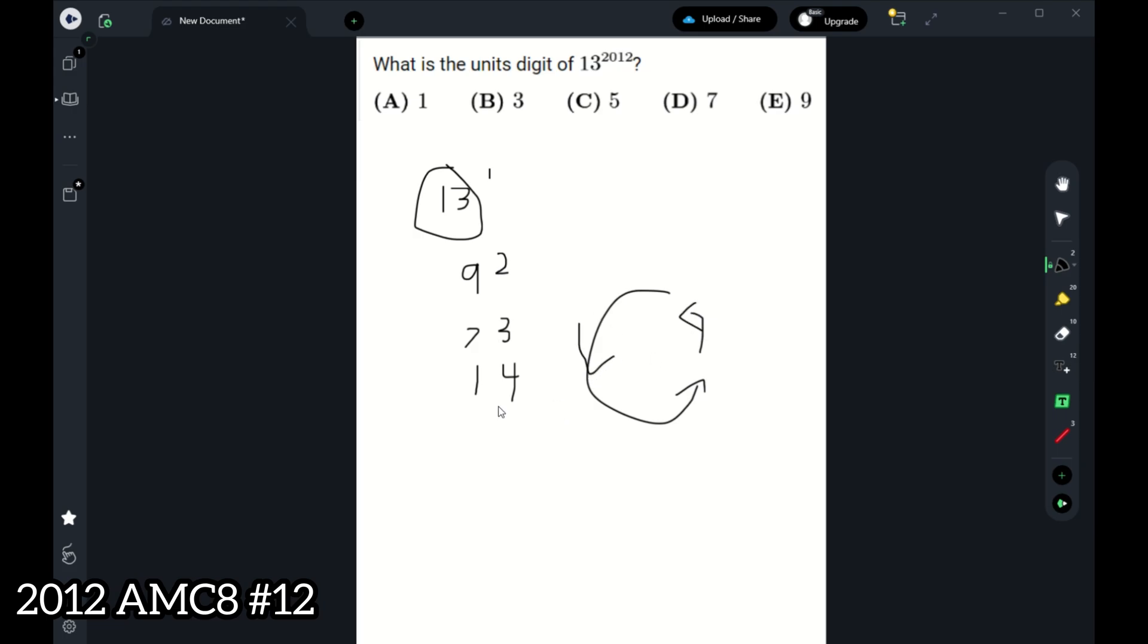It will turn into a 1 when it's to the power of 4. So first, let's see. 2012, what is it? 2012 is divisible by 1, 2, and 4. However, we have to look at the last one.